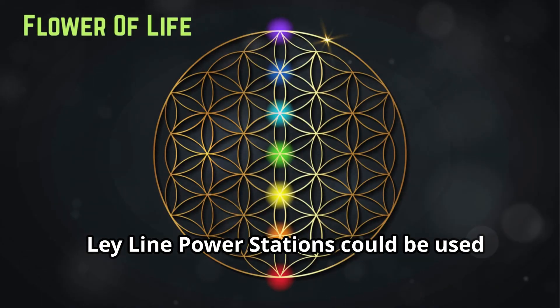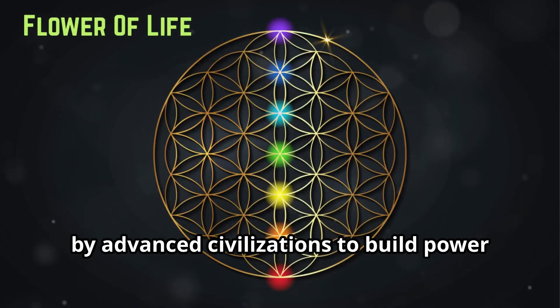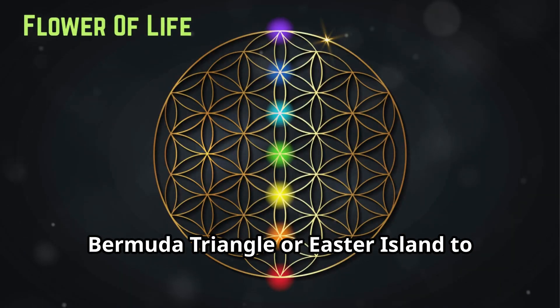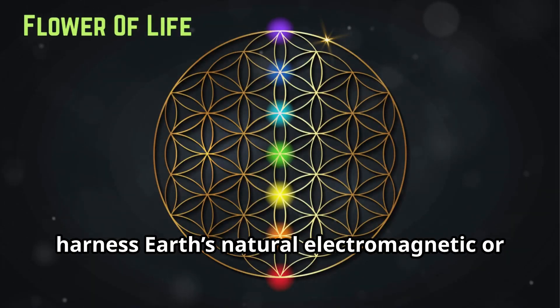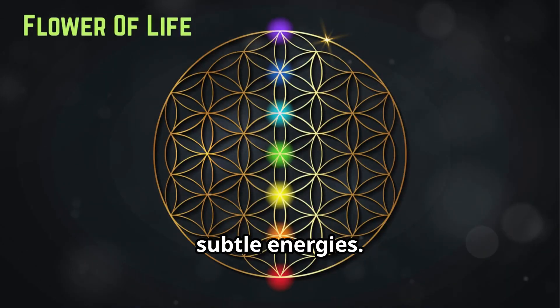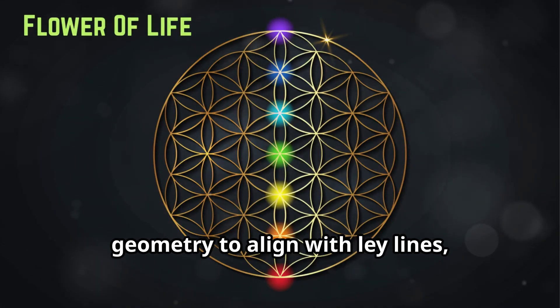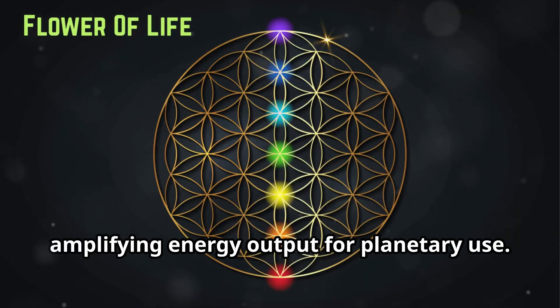Ley line power stations could be used by advanced civilizations to build power plants at vortex points, such as the Bermuda Triangle or Easter Island, to harness Earth's natural electromagnetic or subtle energies. These stations could use sacred geometry to align with ley lines, amplifying energy output for planetary use.